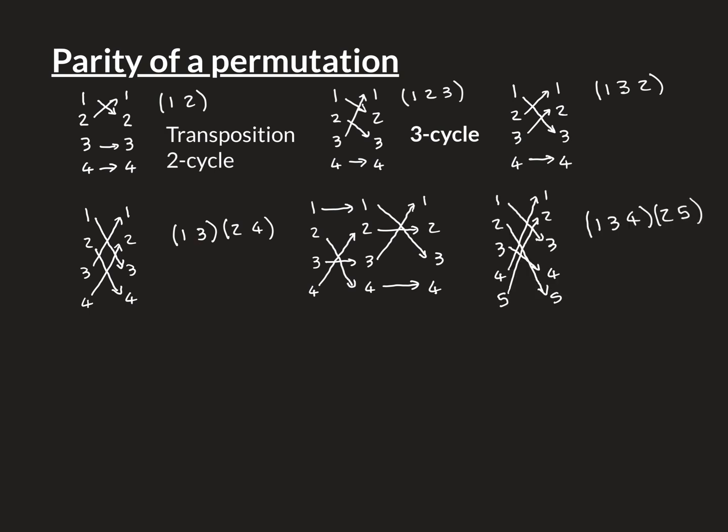Any permutation of these four elements can be described using this notation — it's going to be either a transposition, a 3-cycle, two 2-cycles composed together, or a 4-cycle. We didn't write down an example of a 4-cycle, but that's a good exercise. To further this concept that any permutation can be written in this way, let's go up to the next level.